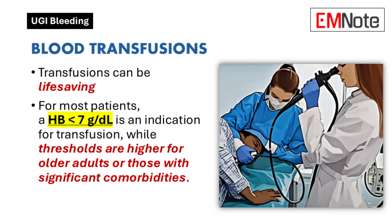Blood transfusions can be life-saving, particularly when guided by restrictive thresholds. For most patients, a hemoglobin level below 7 grams per deciliter is an indication for transfusion, while thresholds are higher for older adults or those with significant comorbidities.